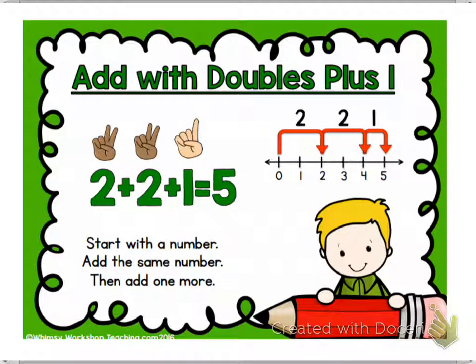For this one, with doubles plus 1, this number sentence really was 2 plus 3 equals 5. What they did was they split up 3 into 2 and 1, because they knew that the doubles would be 2 plus 2. So they knew that 2 plus 2 was 4, and then you added 1 to make 5.